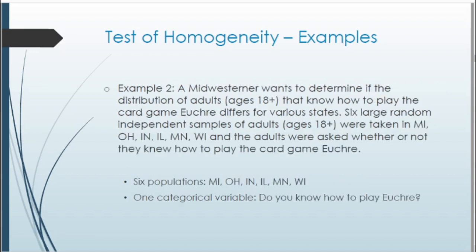Second example: a Midwesterner wants to determine if the distribution of adults who know how to play the card game Euchre differs across states. Six large random independent samples of adults were taken in Michigan, Ohio, Indiana, Illinois, Minnesota, and Wisconsin, and the adults were asked whether they knew how to play Euchre. Here we have six different populations — one per state — and one categorical variable: the proportion of people who know how to play Euchre. We want to see if that distribution is the same across all six states.